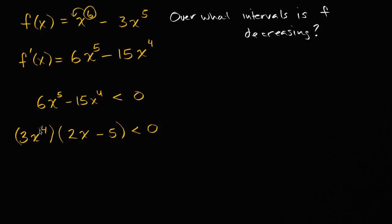Let me verify that: if I distribute it, three times two is six, x to the fourth times x is x to the fifth, three times five is 15, and x to the fourth — yes, that's right.